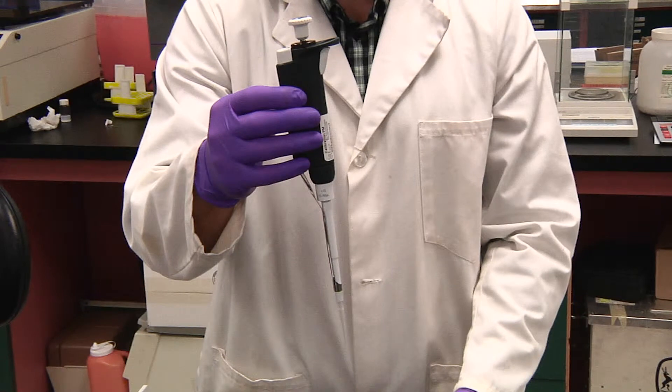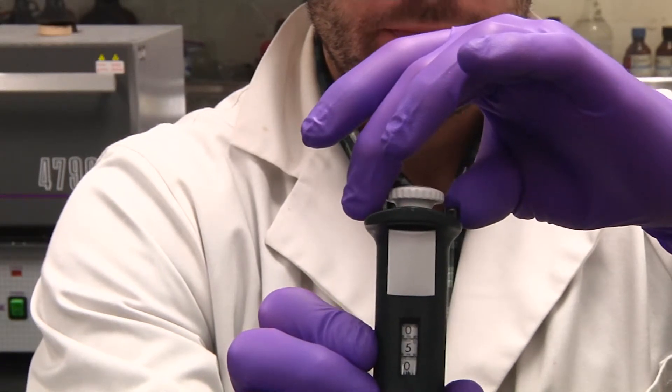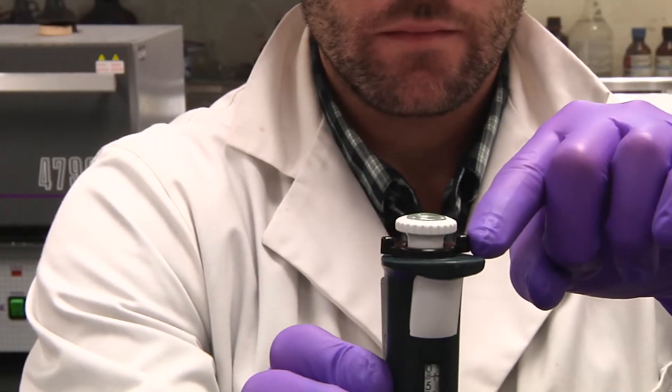To perform the control procedure, you'll need to use the micropipette included in the kit. It should already be set to 50 microliters, but if you need to adjust it,